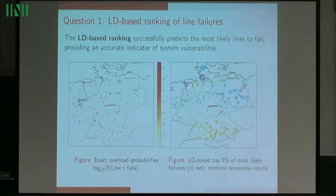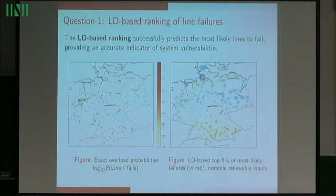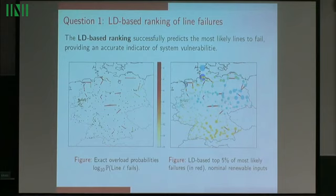To give you a flavor of what this theory can give, we can use such approximation to compute a ranking of the transmission lines based on the likelihood to fail. Here on the left-hand side, we have a snapshot of a German transmission grid with the true failure probabilities portrayed in a heat map from yellow to red. And on the right-hand side, we have the predicted line failures from this large deviation approach in red. The conclusion is that they provide an accurate analytic indicator of system vulnerabilities.